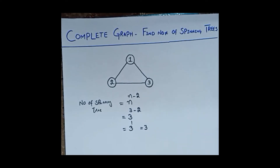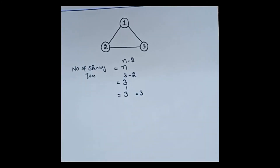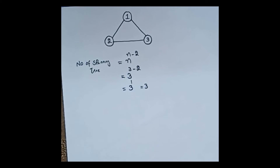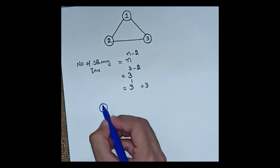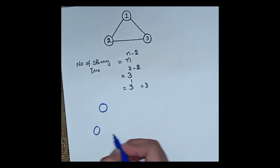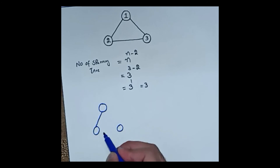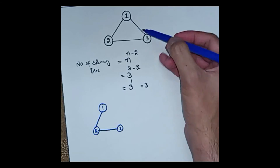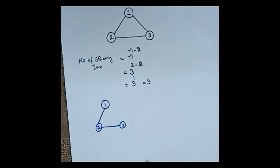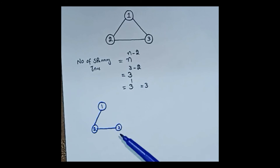So the number of possible spanning trees of this graph is equal to three, by that formula. If I draw all possible spanning trees of this graph, the first possible spanning tree will be this one — nodes one, two, and three — and I ignore this edge. As you see, in a spanning tree there is no cycle, so it looks like that.